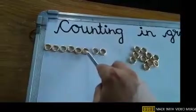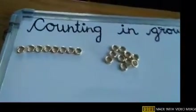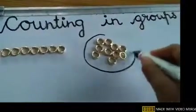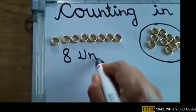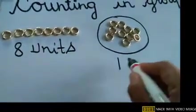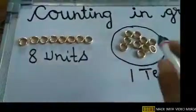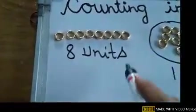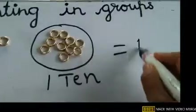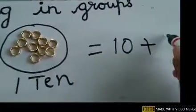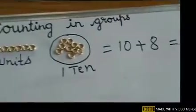Now: 1, 2, 3, 4, 5, 6, 7, 8 — here are 8 rings. So we got one group of 10 rings and 8 single rings. These are 8 units — 8 units means 8 single rings. So I got 1 ten and 8 units. That means: 1 ten is 10, plus 8 units is 8, which equals 18.